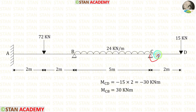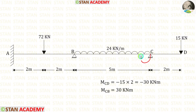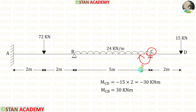The magnitudes of MCD and MCB are the same, but they act in opposite directions. MCD is acting in the anti-clockwise direction, which is why we got a negative value. MCB is acting in the clockwise direction, so it is positive. At point C, we have calculated both moments. For further analysis, we do not need to consider the overhanging span or the moment MCD.